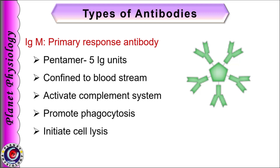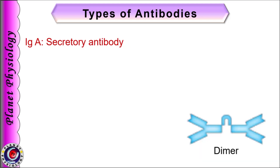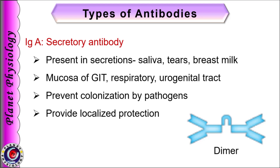IgM antibodies expressed on B-lymphocytes as B-cell receptors are monomers, but secretory IgM are pentamers. IgA is a dimer, i.e., made up of 2 immunoglobulin units. It is also known as the secretory antibody as it is found in various secretions like saliva, tears and breast milk. IgA antibodies are also found in mucosal areas such as the gastrointestinal tract, respiratory tract and urogenital tract, where they prevent colonization by pathogens. Thus IgA antibodies provide localized immunity.